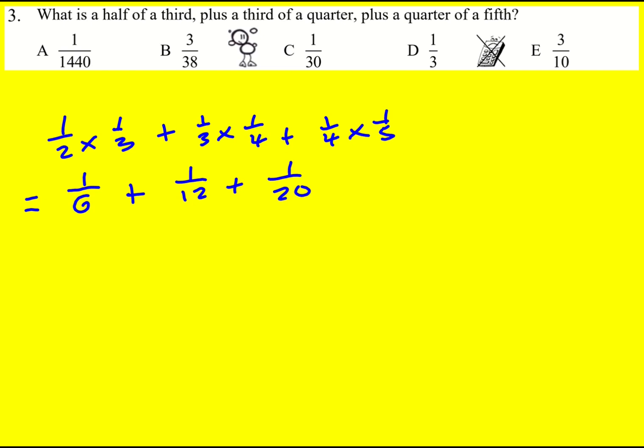And then I'm going to try and get a common denominator between these, although actually first of all I'm going to combine the first two because they're quite easy to combine. This is going to be 2 over 12 plus 1 over 12 plus 1 over 20. And if I add these two, I'll get 3 over 12, which will actually simplify to a quarter.